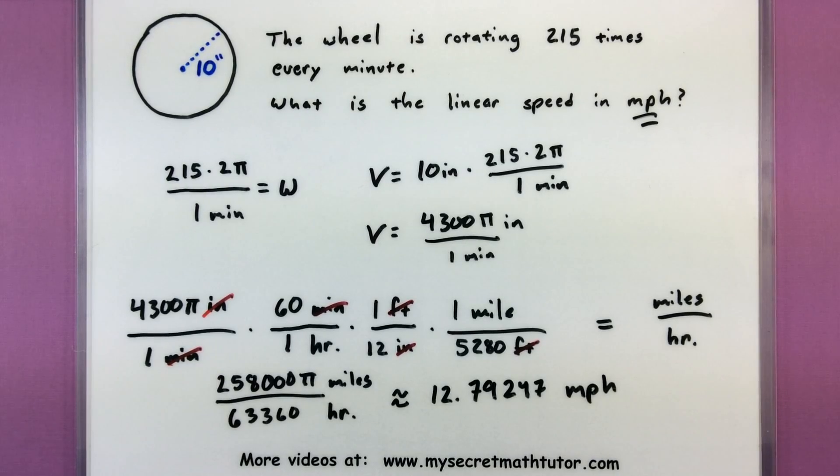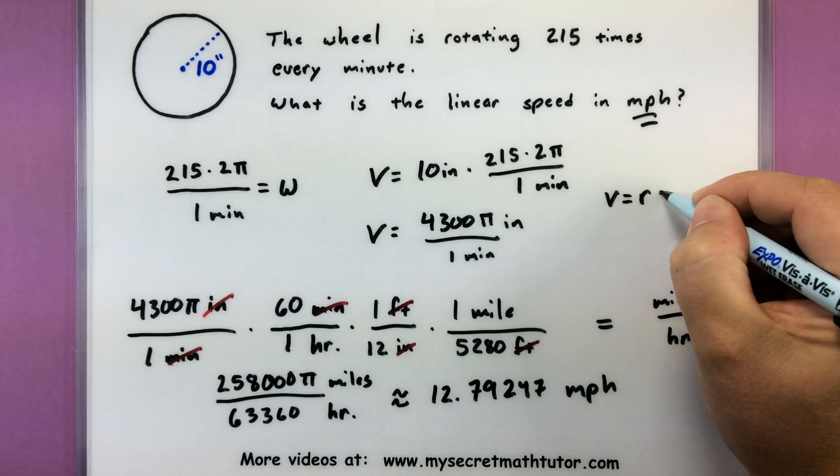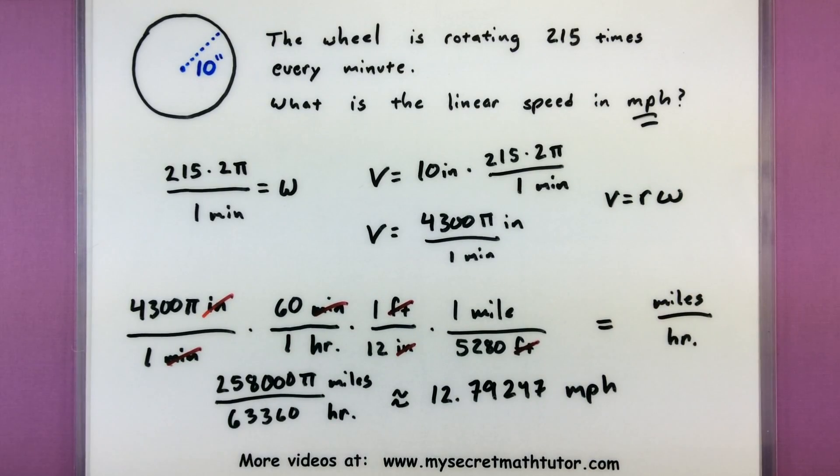So as you can see that formula is going to get your foot in the door. That linear speed is equal to the radius times the angular speed. But also watch for problems like this where you may have to do a little bit of work converting your units. In which case simply multiply it by fractions that are equal to 1, and then I'll get it into the proper units.